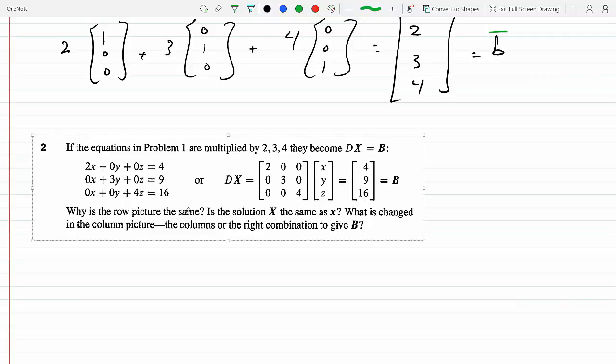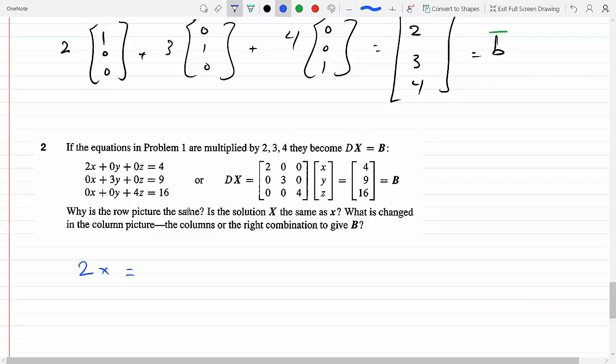Well, the row pictures are the same because the equations of the planes remain the same. Because if I solve 2x equals 4, that gets me x equals 2, same plane I got in problem number one.